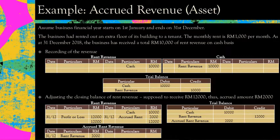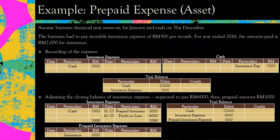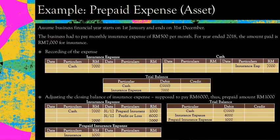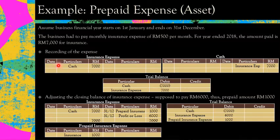The next item is prepaid expense. Prepaid expense is an asset because you have overpaid your obligation. The business has to pay monthly insurance of RM500 per month; for year ended 2018, the amount paid was RM7,000. Since RM500 × 12 months equals RM6,000, you should only have paid RM6,000. But since you paid RM7,000, you overpaid by RM1,000. You record debit insurance expense, credit cash RM7,000.